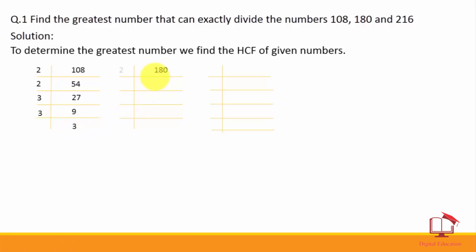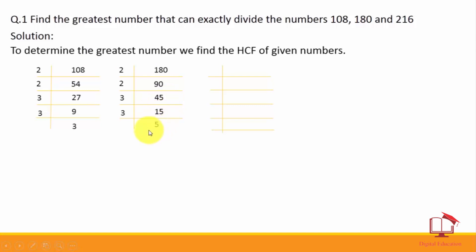Now for 180: 2 × 9 = 18 (0 as it is); 2 × 4 = 8, carry 1; 2 × 5 = 10; then 3 × 3 = 9, carry 1; 3 × 5 = 15; 3 × 5 = 15 again. So the prime factors of 180 are 2², 3², 5.